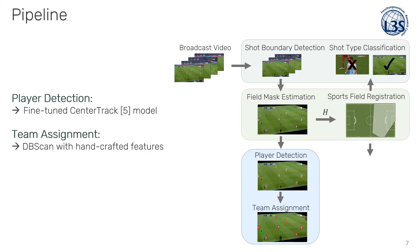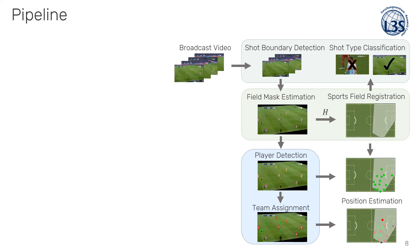The next step is to detect players, where we use a fine-tuned CenterTrack model. Knowing the rough position of the feet in the bounding box is enough to reduce the box to a player position. The extracted bounding boxes are then used for team assignment — in particular into team A, team B, and other — where we use the DB-SCAN clustering algorithm on hand-crafted color features. Finally, the pixel positions of the players are mapped to their respective 2D positions using the homography matrix.